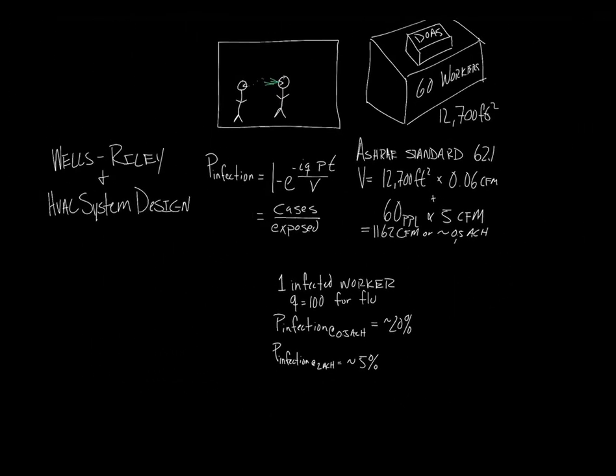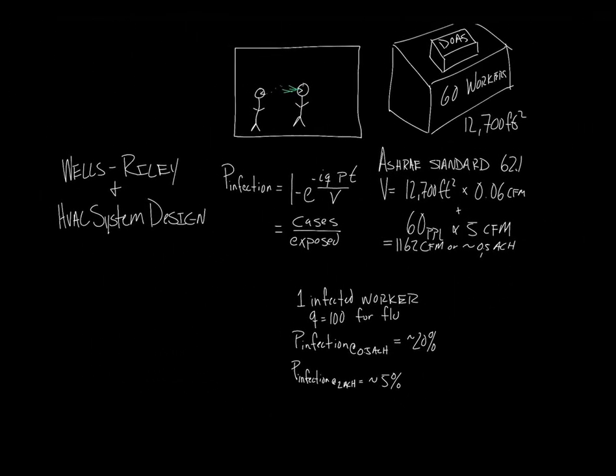This shows the impact that HVAC system design, specifically ventilation and air change rates, can have on potential spread of airborne infection. In a future podcast, we'll take a look at how the Wells-Riley equation has been modified to account for variable volume systems and filtration.